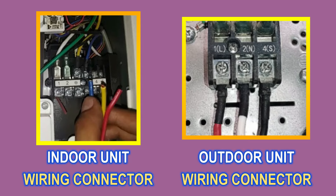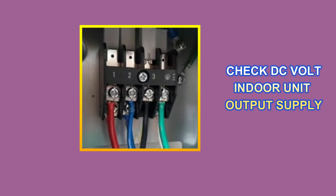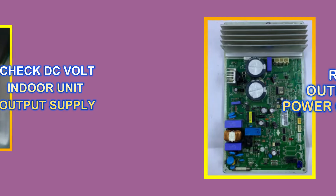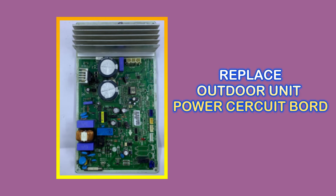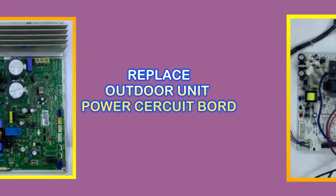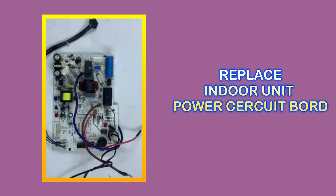If the same color code wire is installed and the error is still coming, then another reason could be a voltage issue. Turn on the indoor unit and open the wiring cover of the outdoor unit. Now check the DC voltage at the output supply of the indoor unit. If the indoor unit is providing DC output supply and you are still getting this error, then you will have to replace the PCB of the outdoor unit. If the indoor unit is not providing output supply, then you have to replace the power circuit board of the indoor unit.